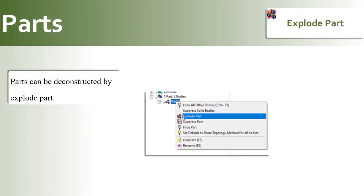Parts can be deconstructed. Select the part in the tree outline, then use the right mouse button option and Explode Part to break the part into individual bodies. When you change the part-body grouping using Explode Part, the shared topology feature is marked for regeneration if it is present in the model.